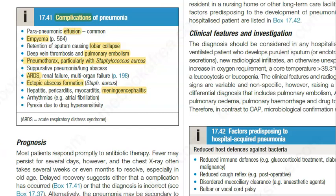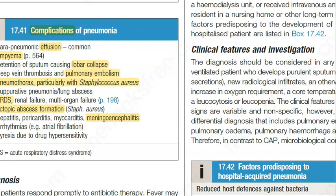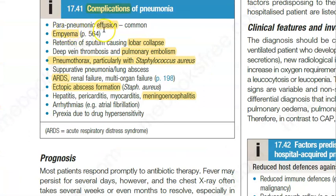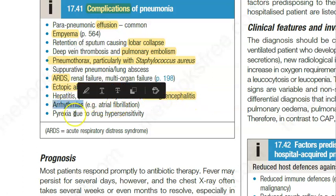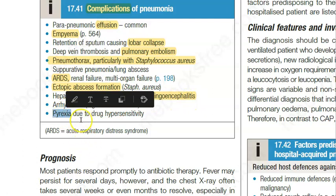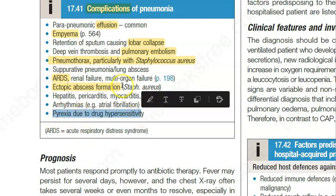If you leave pneumonia untreated, what are the complications? It can become parapneumonic effusion, empyema in the pleural cavity, lobar collapse, pulmonary embolism, pneumothorax, lung abscess, acute respiratory distress syndrome, ectopic abscess formation, meningoencephalitis spreading to the liver and heart, arrhythmia, and pyrexia due to drug hypersensitivity.